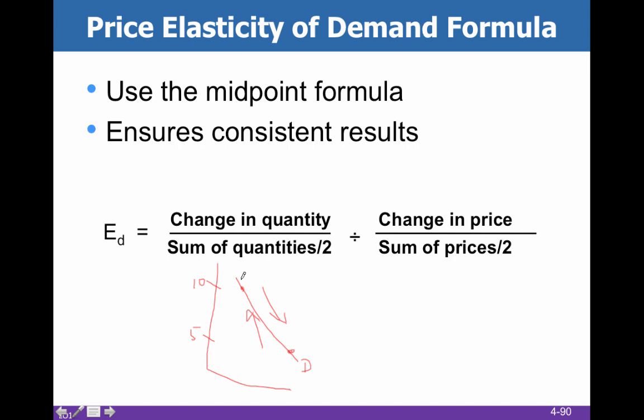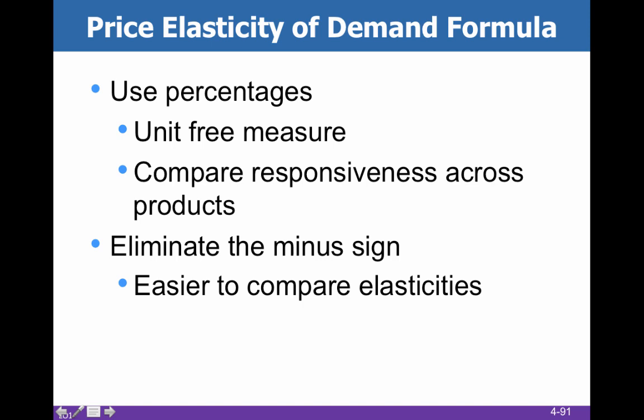By taking the sum of the quantities and dividing by 2, it gives us the average — that's the idea behind the midpoint. We're going to use percentages, which gives us a unit-free measure. It helps us compare responsiveness across products, so we can compare milk to bowling balls even though they're very different.